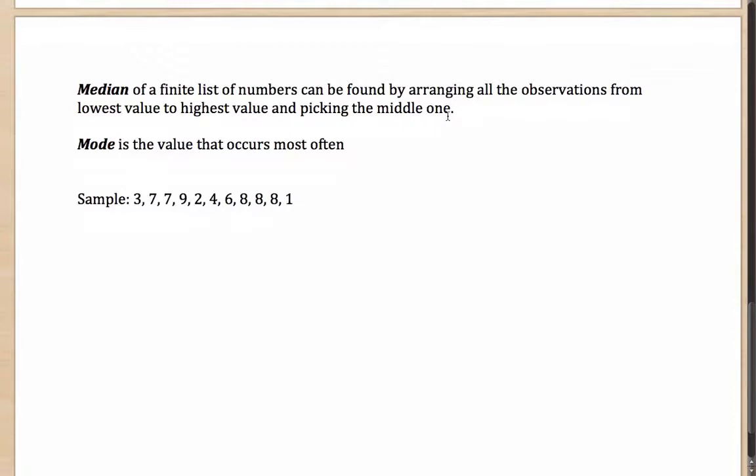Essentially it represents the central value of the entire list or the middle value of the entire list. Mode is the value that occurs most often.